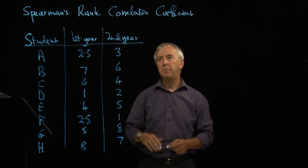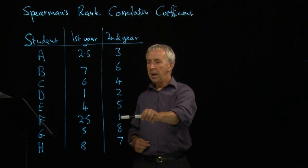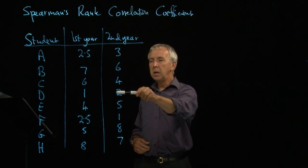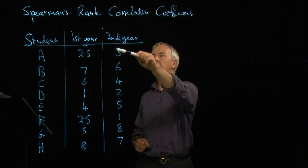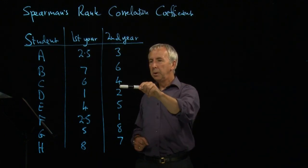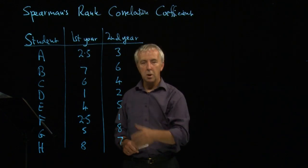Then at the end of the second year, the positions had changed slightly. F was now top, having been equal second the year before. D had gone down from top to second. A had gone to third from equal second, and so on. C had come up from sixth place to fourth place, and so on with the rest of them.